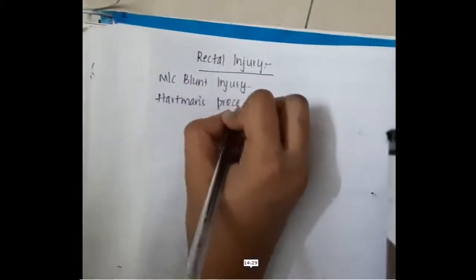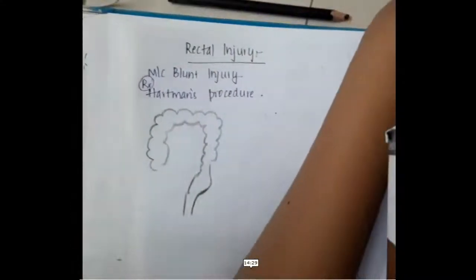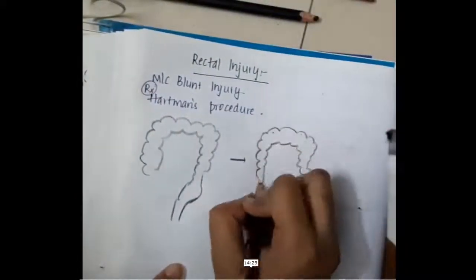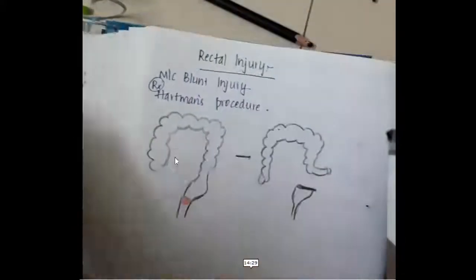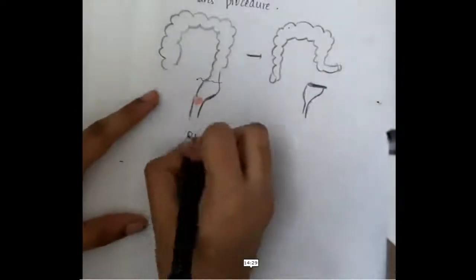In rectal injury, the most common blunt injury treatment is Hartmann's procedure. In this procedure, an incision is made in the rectum, the proximal segment is brought out as a stoma, and the distal segment is closed with sutures.